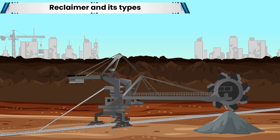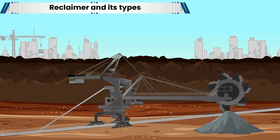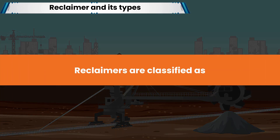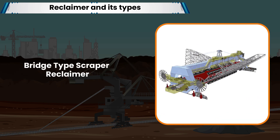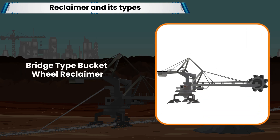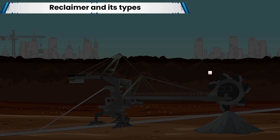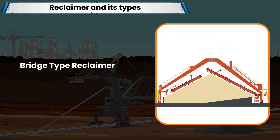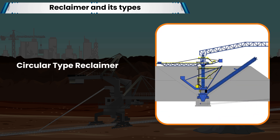A reclaimer's function is to blend or homogenize the mixture of raw material and feed it to the respective hopper. Reclaimers are classified as: bridge type scraper reclaimer, bridge type bucket wheel reclaimer, side arm scraper reclaimer, barrel type reclaimer, and circular type reclaimer.